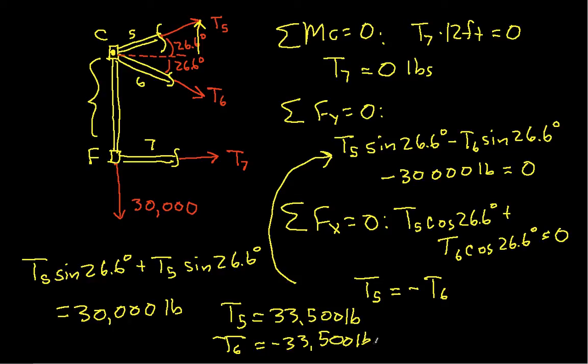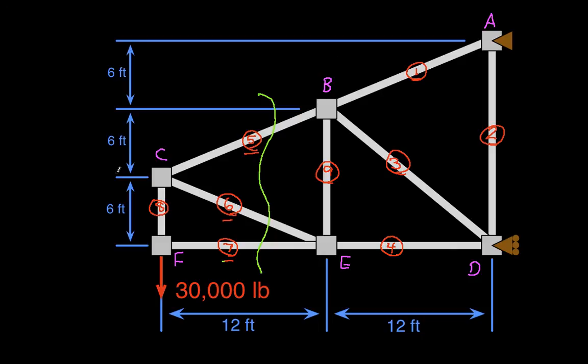And for this particular truss, it turns out that probably if we took another section through here to get T1, T3, and T4, that would be a pretty easy computation as well. And then, we'd just have to find the tensions in the vertical members if we wanted all of the tensions. And that wouldn't be that bad. So, for this particular truss, using the method of sections to find all of the tensions in the members would probably be the easier way to do it.